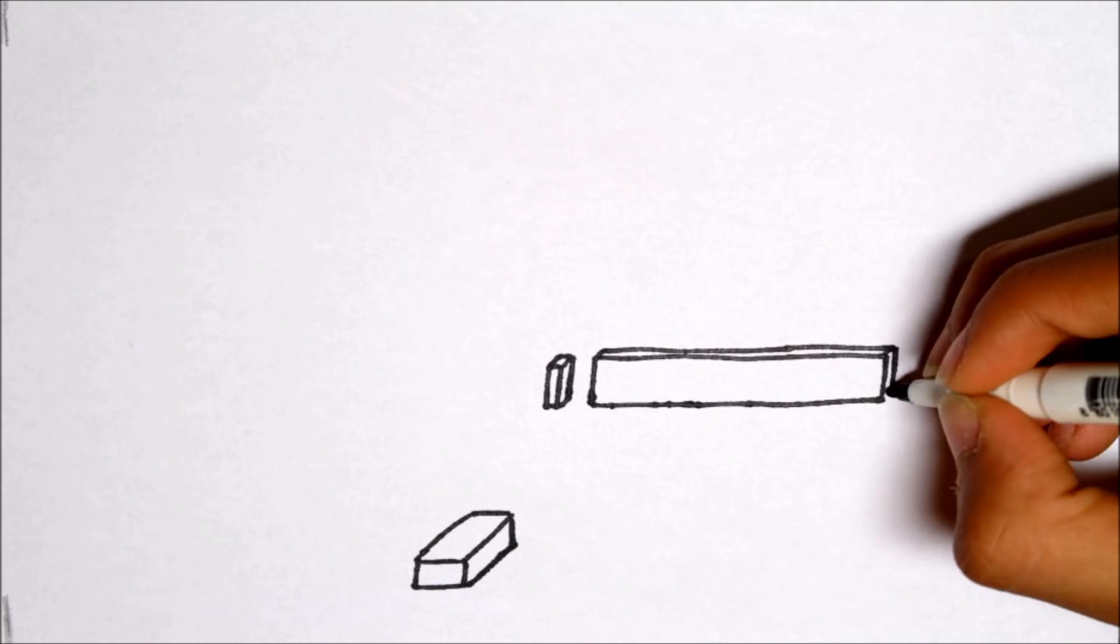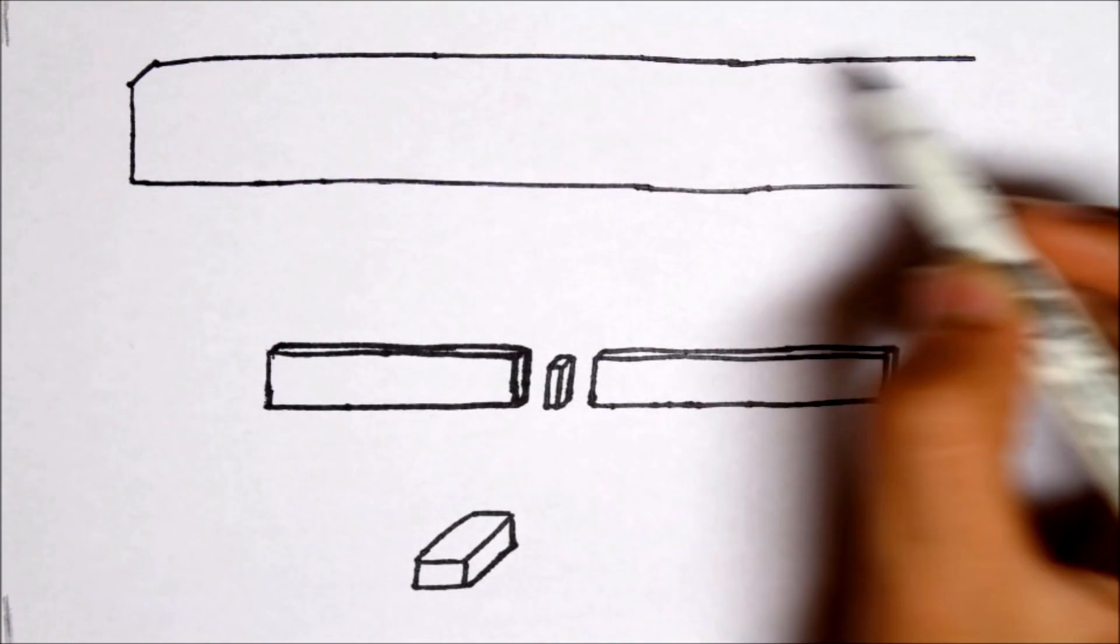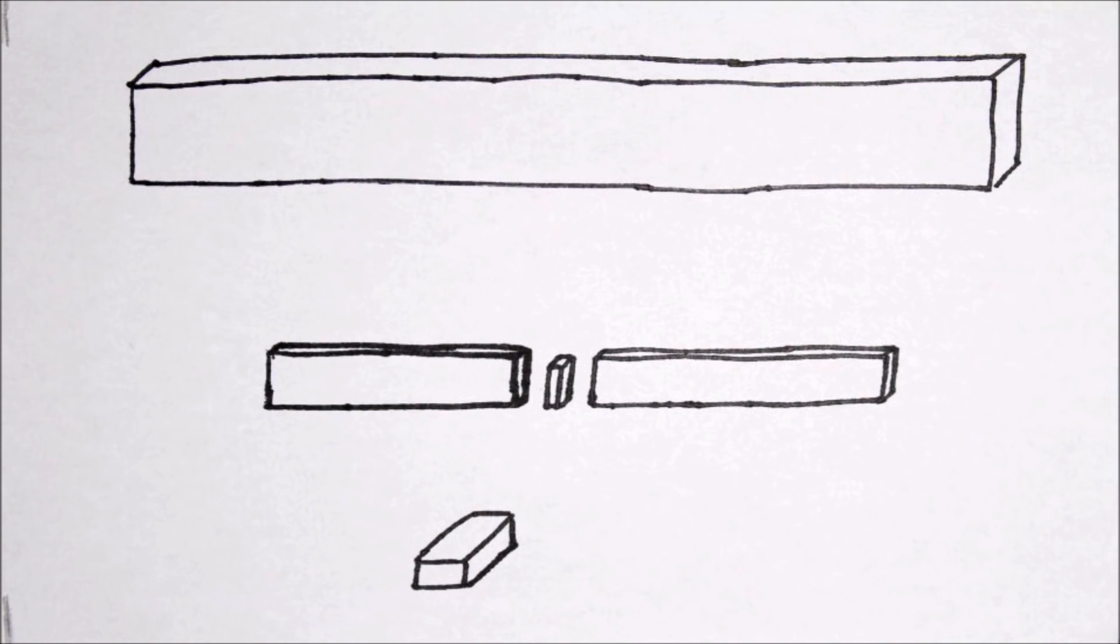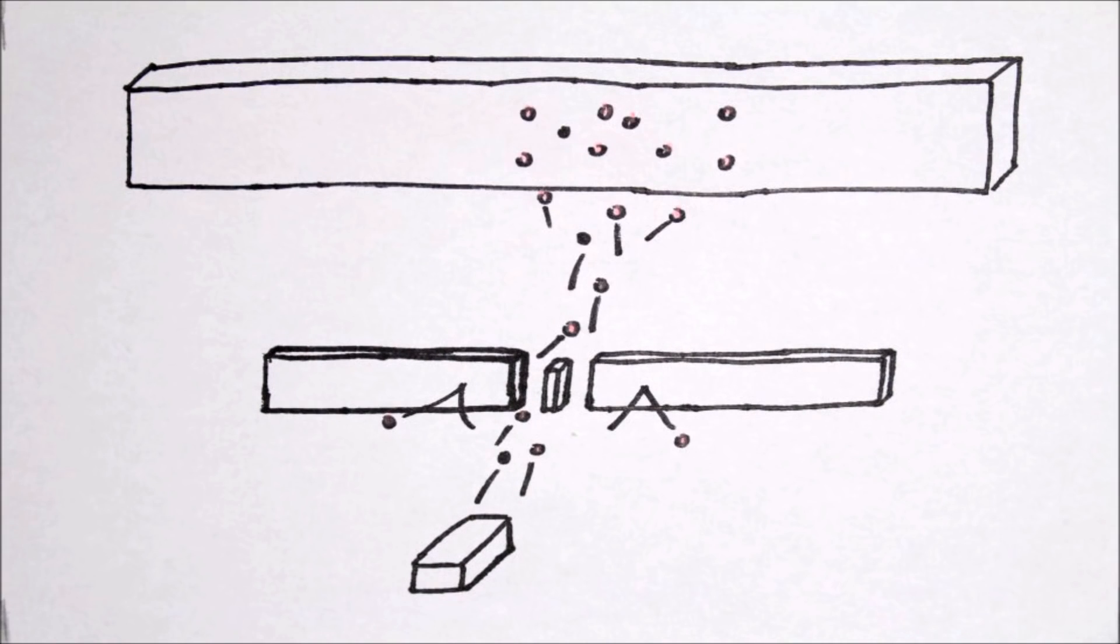Here's how the double slit experiment works. You first shoot a beam of particles, in this case electrons, and then the beam of electrons would pass through two narrow slits. Then the points where the electrons landed would leave a trace like such, so we know where they landed.